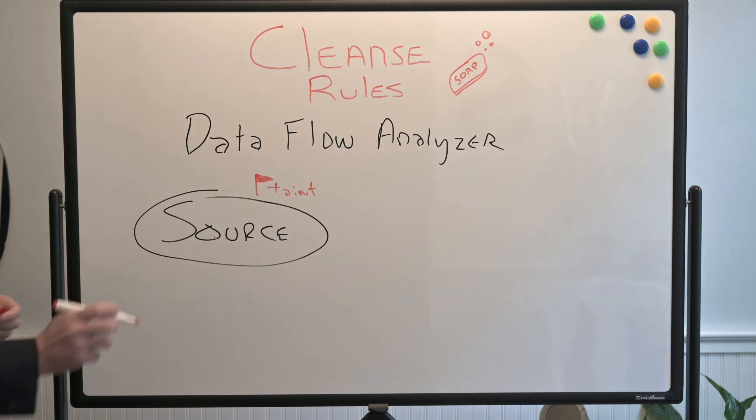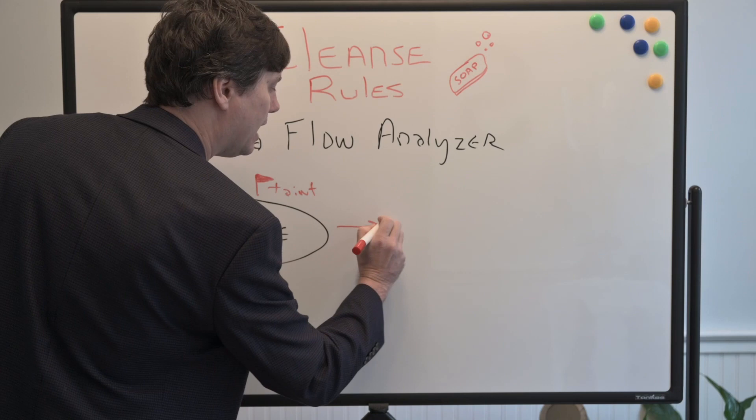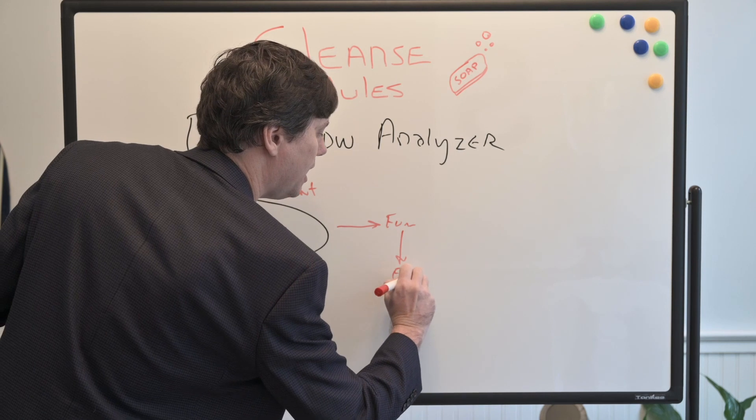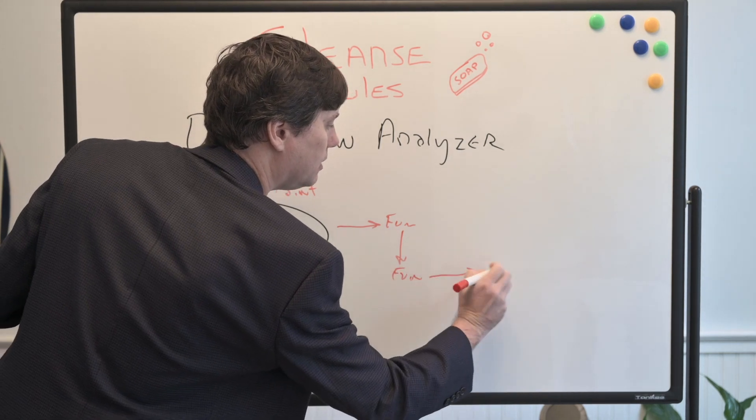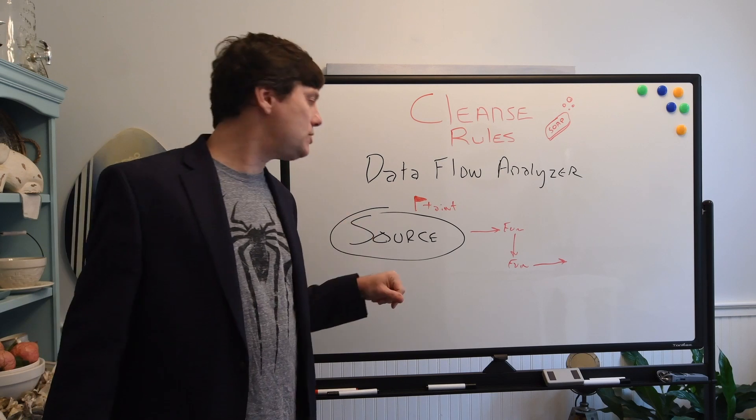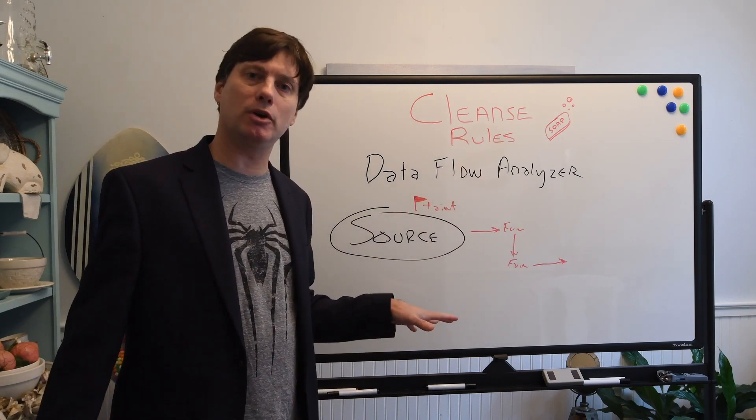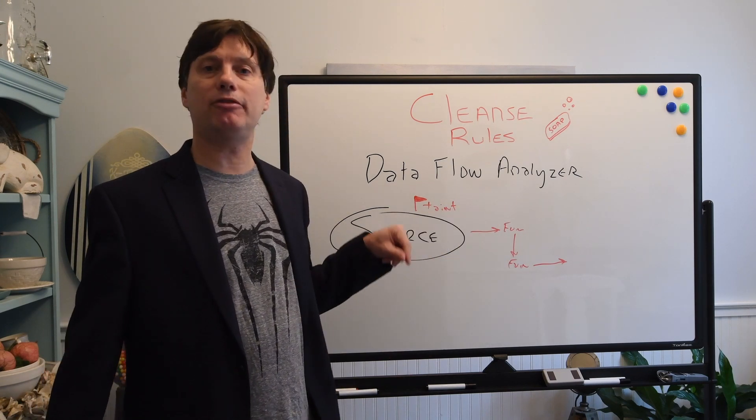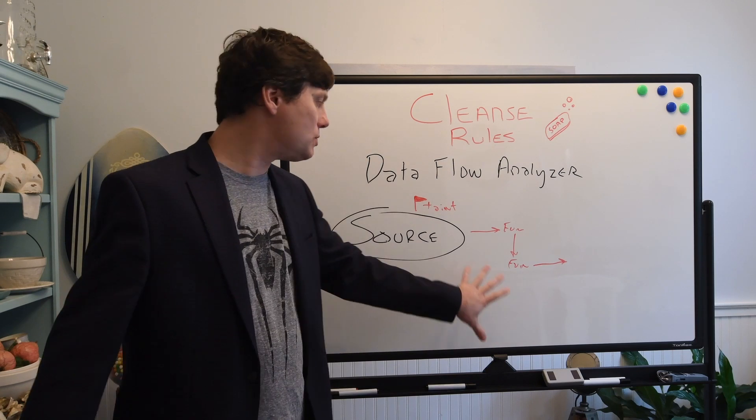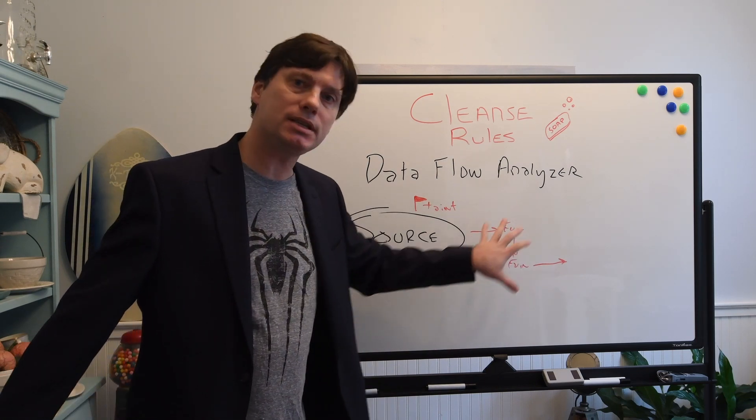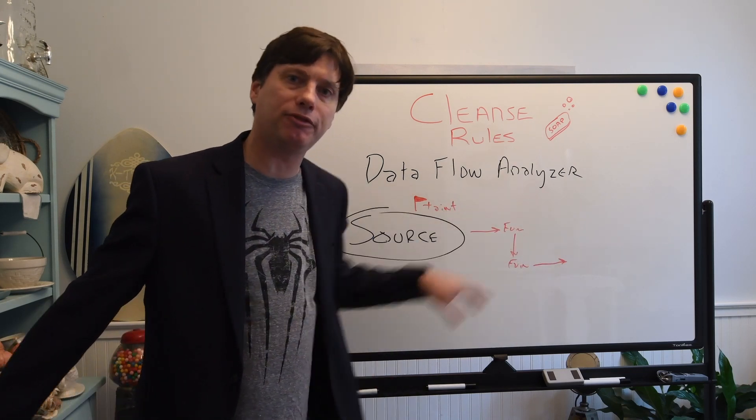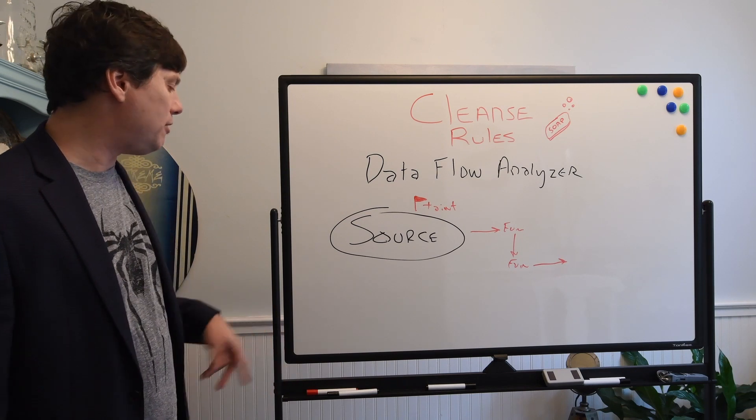Once we pull our source into our application, the data flow analyzer is going to follow it as it goes through a function and another function and another function. If you log into the portal and you look at a particular vulnerability and you go to the diagram, you'll actually see the data flow analyzer and the work that it's done as it tracks through the different functions, the different conditionals and the different packages as the data makes its way through the flow of the application.